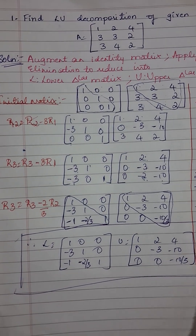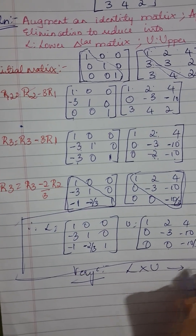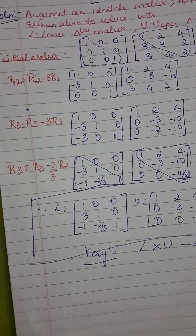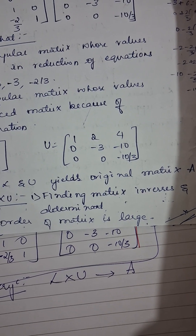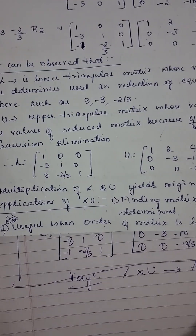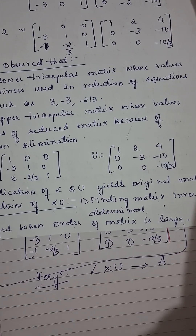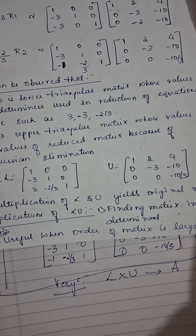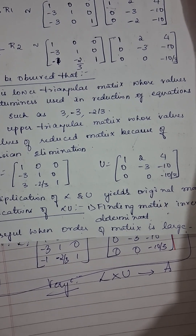One important thing to remember is that you can verify the result: if you multiply L with U, you should be able to get back the original matrix A. A question they may ask is about the applications of LU decomposition. LU decomposition can be used to find the matrix inverse and determinants. It is a very useful method for decomposing a matrix into its constituent parts, especially when the order of the matrix is large. That is it for today's session — thank you, and please subscribe to our channel.